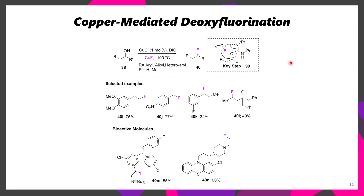It's also possible to use copper to do deoxyfluorination. Using a copper(I) catalyst in the presence of copper(II) and DIC as an activator, it was possible to convert these alcohols into the corresponding alkyl fluorides. I'm not sure how generalizable this methodology is, but this is a method I wasn't familiar with before reading this review.